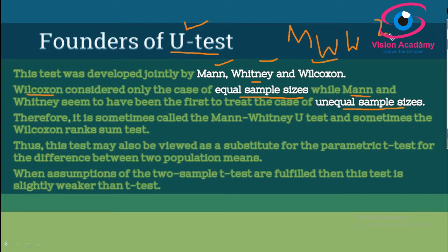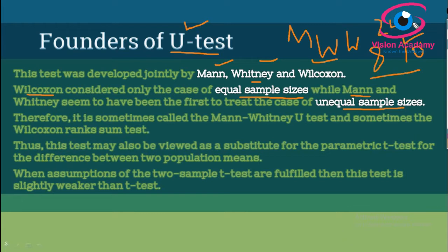The Mann-Whitney U test is applicable for two-population tests. When considering equal sample sizes, you refer to the Wilcoxon rank-sum test, and for unequal sample sizes, it is called the Mann-Whitney U test. Therefore, sometimes it is called the Mann-Whitney U test and sometimes the Wilcoxon rank-sum test.